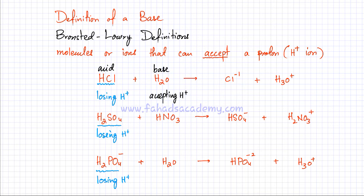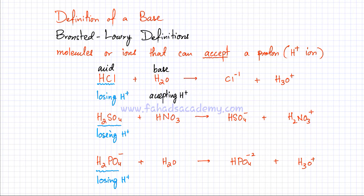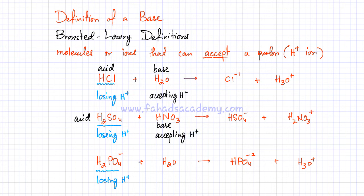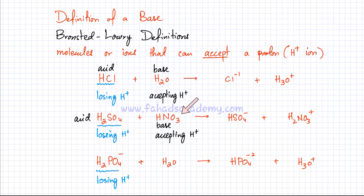Moving to the next reaction: H2SO4 loses an H+1 to form HSO4-1, so H2SO4 is your acid. The base in this reaction is HNO3, because it is accepting H+ ions. You can see HNO3 on the reactant side and H2NO3+ on the product side — it accepted an H+1 ion. So HNO3 is your Bronsted-Lowry base in this reaction.